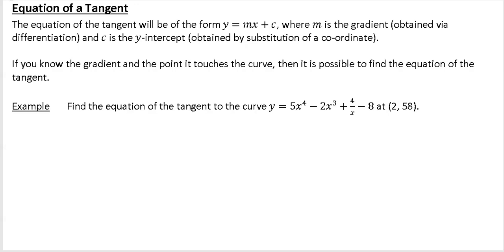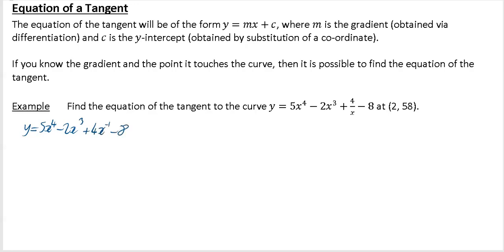To do this, the first thing you want to do is get your curve in normal index form. It's almost there — just the second last bit of it is not quite right. The bit that says plus 4 over x, you can write as 4x to the minus 1. And then you're good to differentiate.